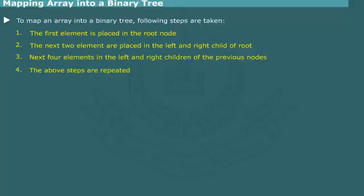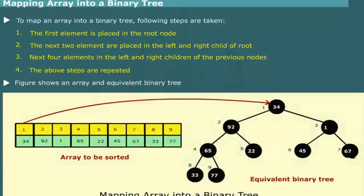The next two elements are placed as the left and right child nodes and so on. Figure shows an example of an array and its corresponding binary tree. The numbers next to nodes indicate the tree order and corresponding indexes in the array.